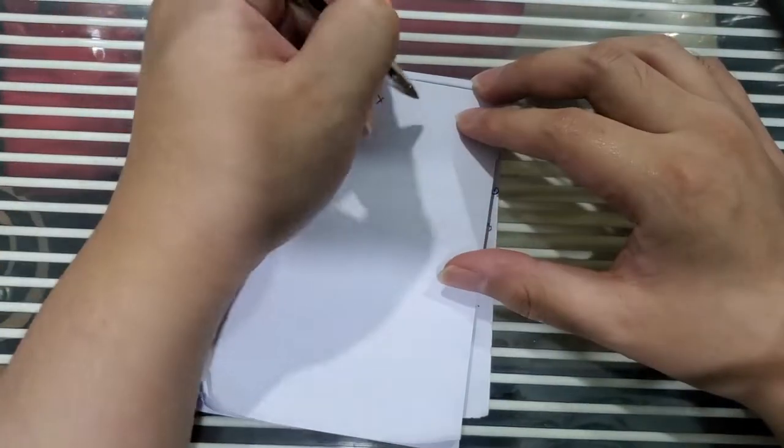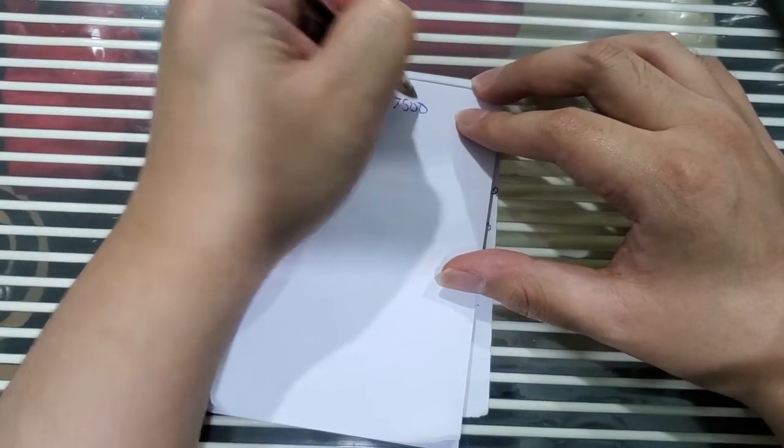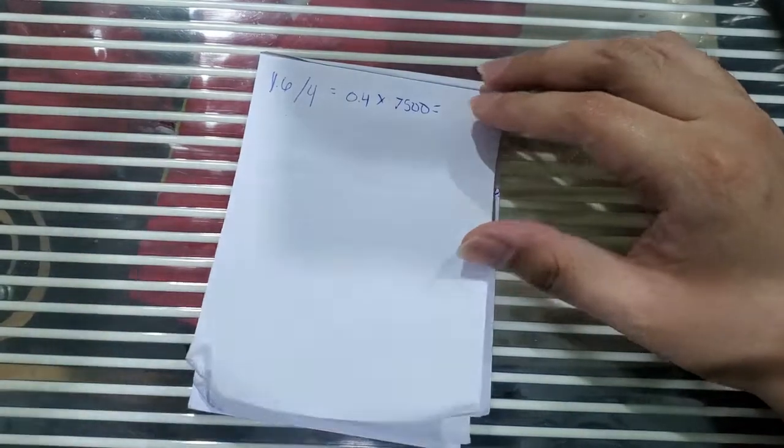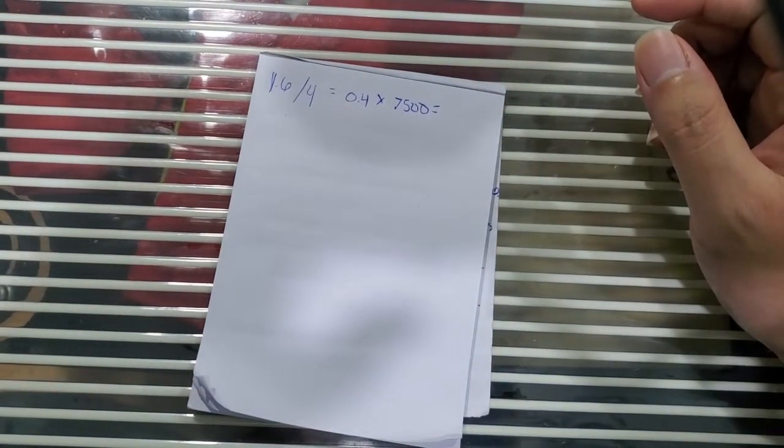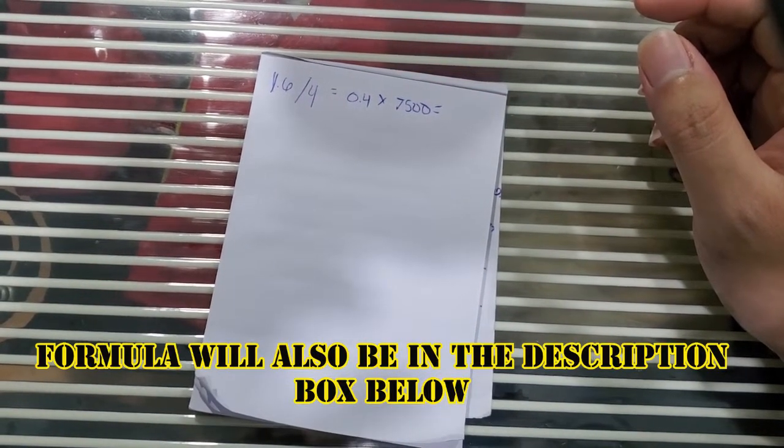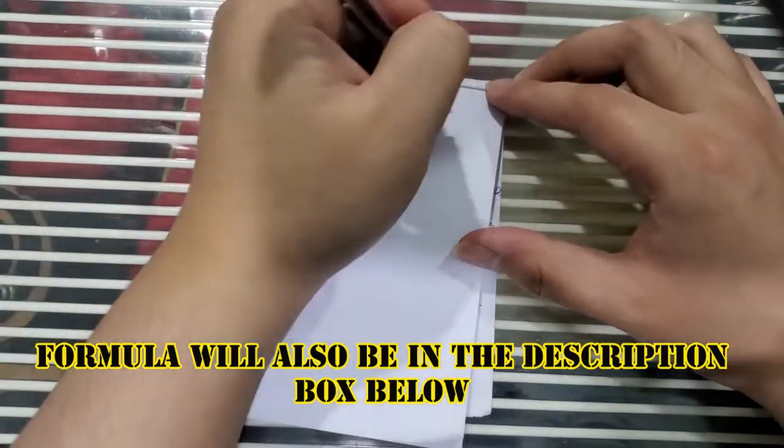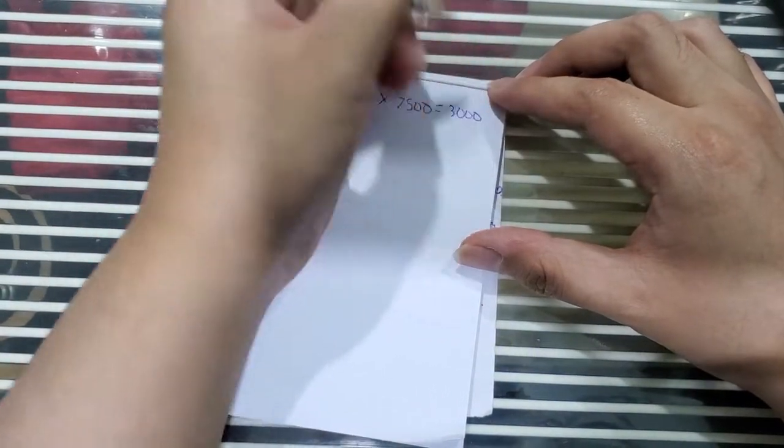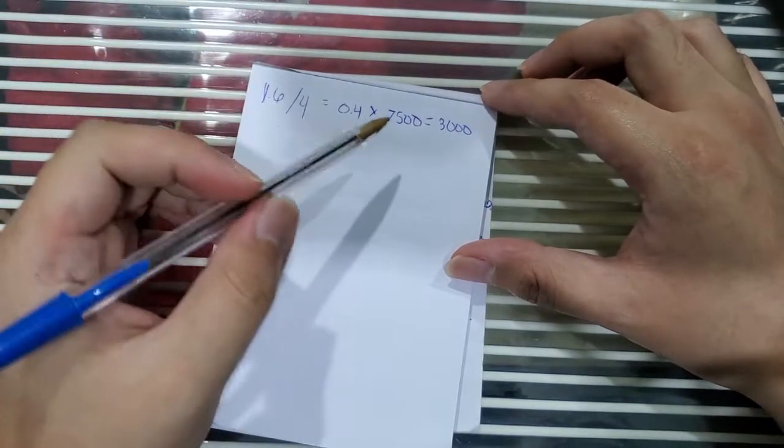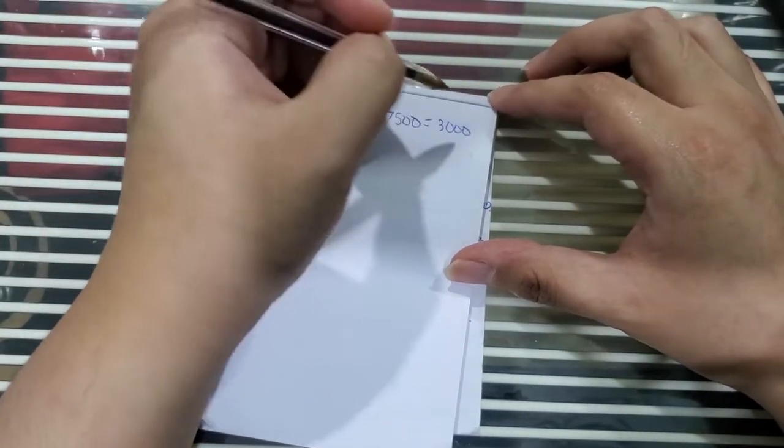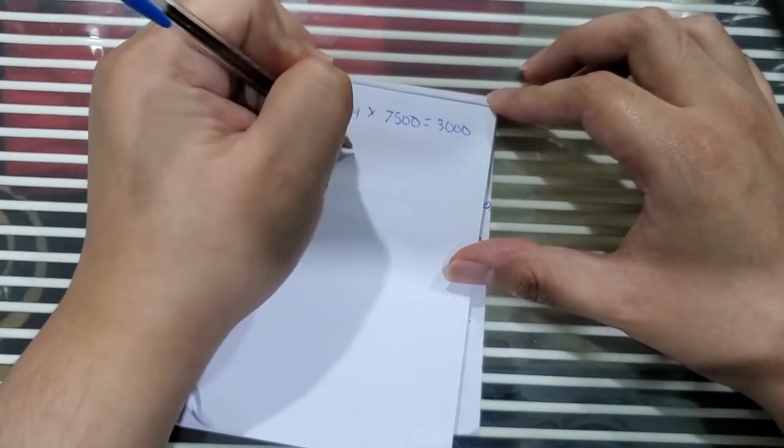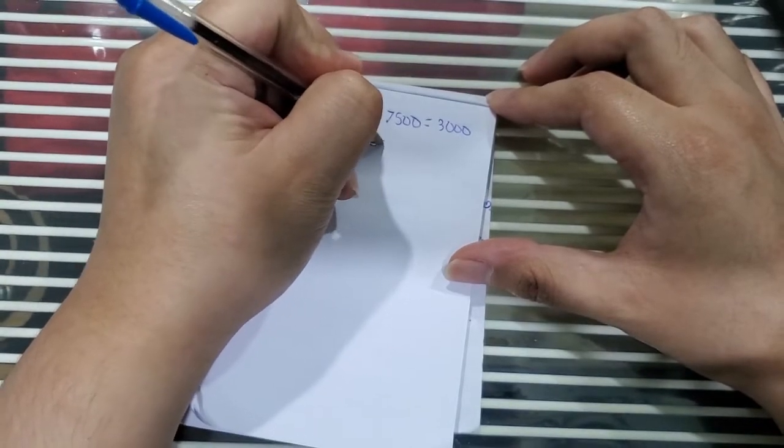Then you multiply 0.4 by the maximum rpm that you would be using, so in this example for the 4AG 20 valve blacktop it's 7500 rpm, so 0.4 multiplied by 7500 is 3000.